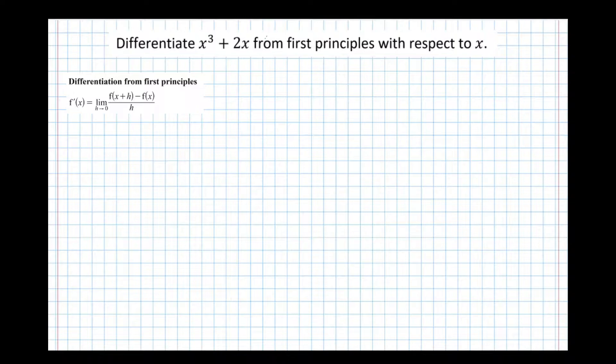So let's have a look at it. First of all, subbing x plus h into this formula, we get the limit as h approaches 0 of, and subbing x plus h into this term here, we get in brackets x plus h cubed, plus, and then subbing x plus h into this, we get 2 lots of x plus h.